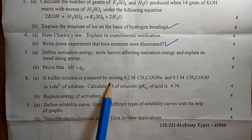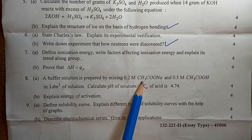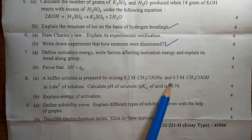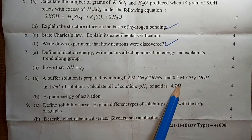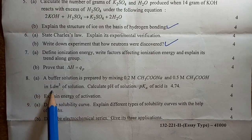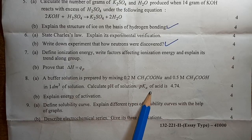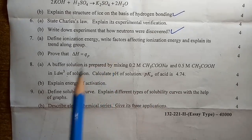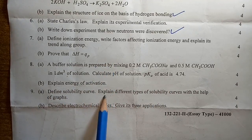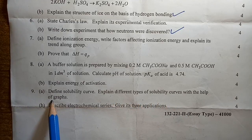A buffer solution is prepared by mixing 0.2 molar sodium acetate and 0.5 molar acetic acid. Calculate the pH of the solution given PKa equal to 4.74. Explain energy of activation. Define solubility curve and explain different types of solubility curves with an example, with the help of graphs.